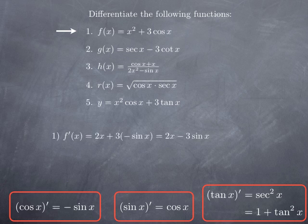Therefore, the derivative is 2x — because it's the derivative of x squared — plus 3 multiplied by negative sine x, which is the derivative of cosine. In other words, 2x minus 3 sine x.